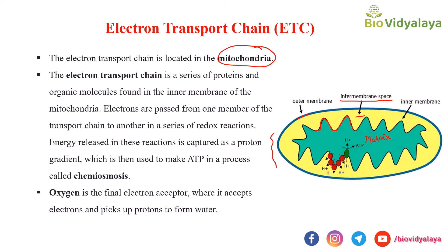The electron transport chain is present in the inner membrane of the mitochondria. It is a series of proteins and organic molecules found in the inner membrane. Electrons are passed from one member of the transport chain to another in a series of redox reactions. Energy released in these reactions is captured as a proton gradient, which is then used to make ATP in a process called chemiosmosis.